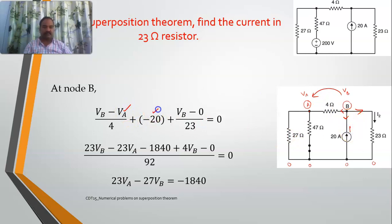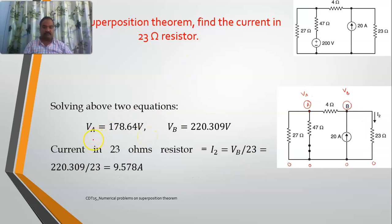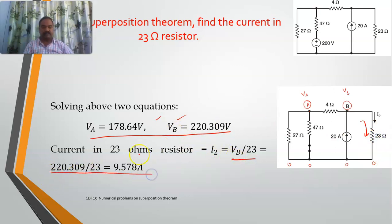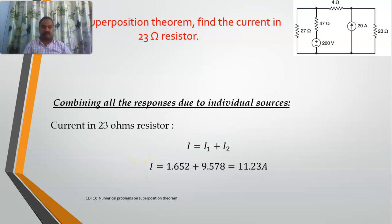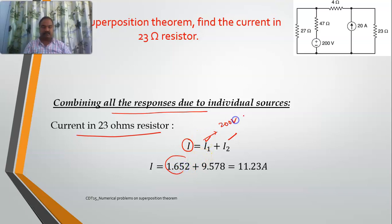At node B, the equation is: vb minus va divided by 4, minus 20 (for the incoming 20 ampere current source), plus vb minus 0 divided by 23 equals 0. Solving both equations gives va and vb. The current in the 23 ohm resistor is vb divided by 23, which gives i2 equal to 9.578 amperes. The total current in the 23 ohm resistor is i equal to i1 plus i2.